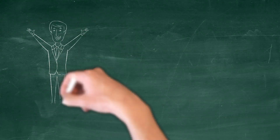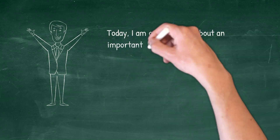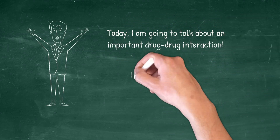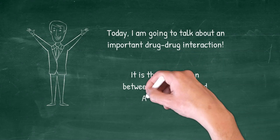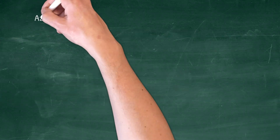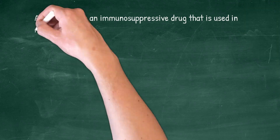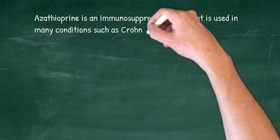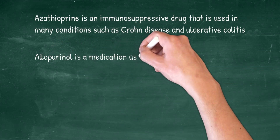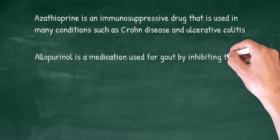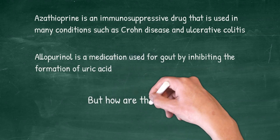Welcome everyone. Today I'm going to talk about an important drug-drug interaction: the interaction between allopurinol and azathioprine. Azathioprine is an immunosuppressive drug used in many conditions such as Crohn's disease and ulcerative colitis, while allopurinol is a medication used for treatment of gout by inhibiting the formation of uric acid.